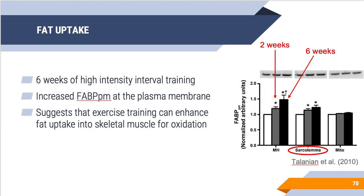A follow-up study, performed about eight years later, looked not only at whole-muscle stores of fat transporters but also how much gets to the plasma membrane. After six weeks of high-intensity interval training, at baseline, two weeks, and six weeks, they found an increase in fatty acid binding protein in total muscle (MH) following both two and six weeks. Importantly, they also found at the sarcolemma — the plasma membrane — there was an increase in the fatty acid transporter at the plasma membrane following an exercise bout at two and six weeks of training, suggesting that endurance exercise training can enhance fat uptake into skeletal muscle for oxidation.